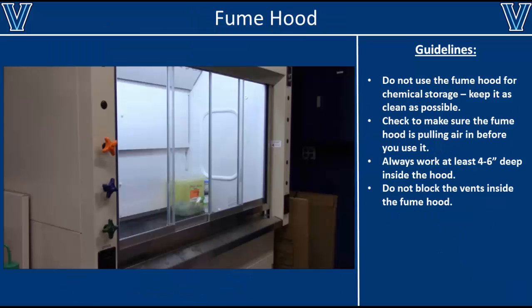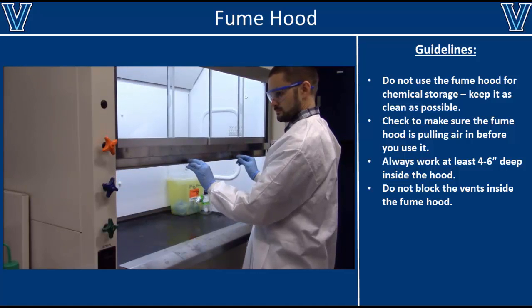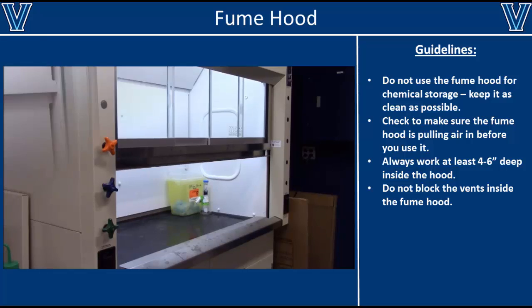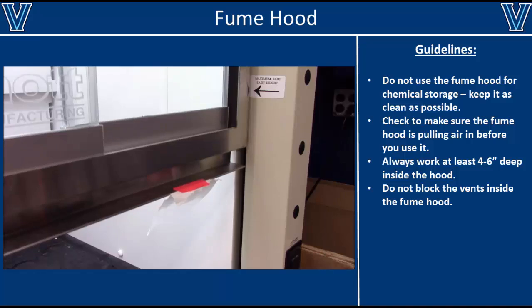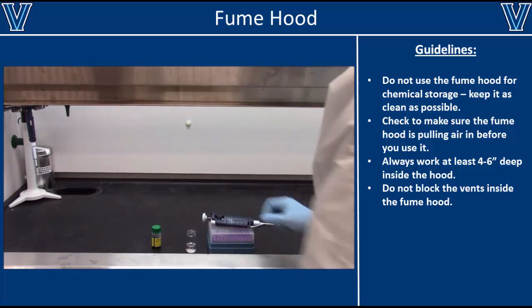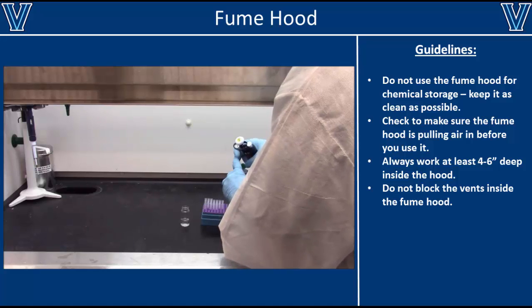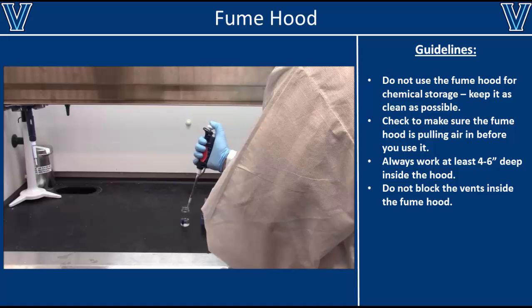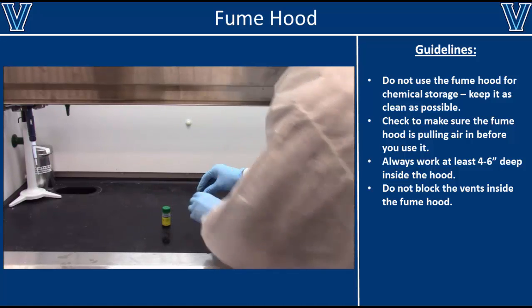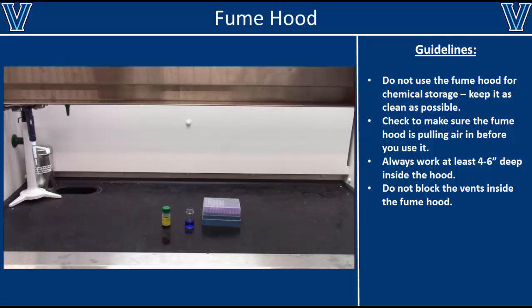If you work with any hazardous chemicals in your research, you will probably need to use the fume hood at some point. To begin working in the fume hood, raise the sash to the maximum safe height. Note that if you raise it too high, the fume hood will not work properly and some vapors may escape into the lab. When you raise the sash, it should start drawing air inwards. If there is no air flow or any alarms go off in the hood, let your supervisor know immediately and do not use the fume hood. When performing experiments in the fume hood, you should always work at least 6 inches deep. You should also keep the fume hood as clean and empty as possible to prevent hazardous chemicals from cross-reacting and to ensure the vents in the back remain unblocked. If these vents become blocked, the fume hood may lose suction and hazardous vapors may escape into the lab.